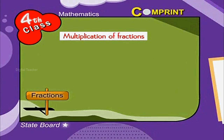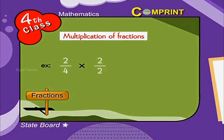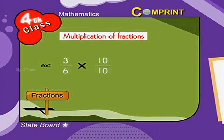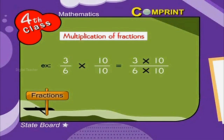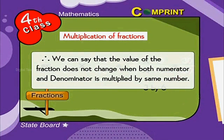Multiplication of fractions: The value of a fraction does not change by multiplying its numerator and denominator by the same number. For example, 2 by 4 multiplied by 2 by 2 is equal to 4 by 8. In another example, 3 by 6 multiplied by 10 by 10 can be written as 3 into 10 by 6 into 10, which equals 30 by 60, which simplifies back to 3 by 6. Therefore, the value of a fraction does not change when both numerator and denominator are multiplied by the same number.